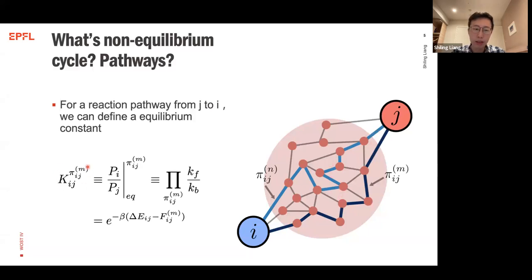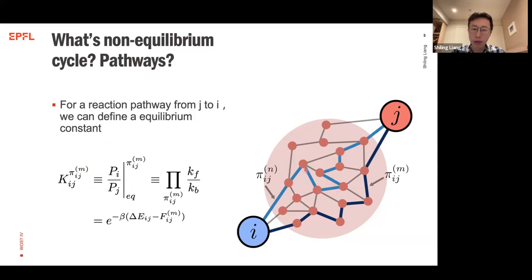Along each pathway we can find the equilibrium constant. This equilibrium constant is understood as follows: if this pathway is very fast and dominates the reaction while all other pathways are very slow, then the population ratio of the two states reaches the equilibrium determined by that chosen pathway. The equilibrium constant is defined as the product of all forward rates divided by the backward rates along the pathway, and it is related to the thermodynamic properties — specifically the energy difference between the two states and the driving force along that pathway.